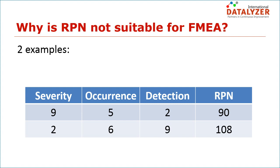Since the start of using FMEAs, the risk priority number has always been criticized. Let's look at two examples. The first example has a severity of 9, an occurrence of 5, and a detection rating of 2, resulting in an RPN number of 90.